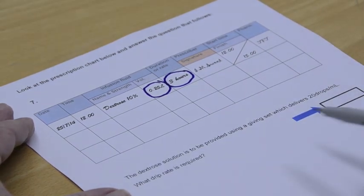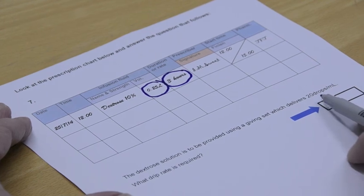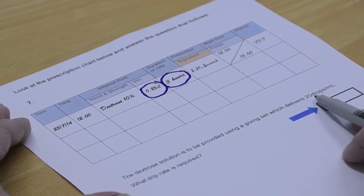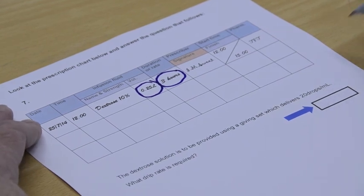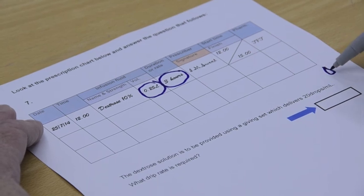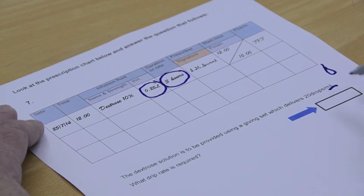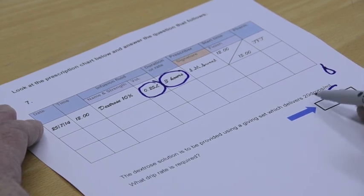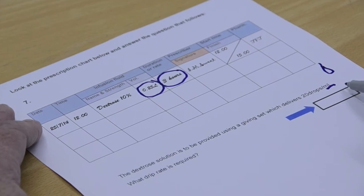But it's using what they call a giving set. And this one, there are others, but this one delivers at 20 drops per mil. So in other words, if that was a drop, it would take 20 of those to get to one mil. So you can imagine 20 of those dropping to get one mil. Or in fact, 100 to get a teaspoonful, which is about five mils.